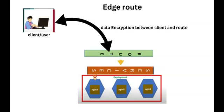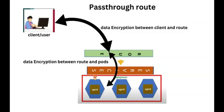The second type of secure route is pass-through. With pass-through routes, there is traffic encryption between the client and the router and also from the router to the application pod — TLS happens all the way through with no TLS termination at the router. Because TLS does not terminate at the router, the application is responsible for assigning the TLS certificate, which can be mounted as a secret volume to the application pod.